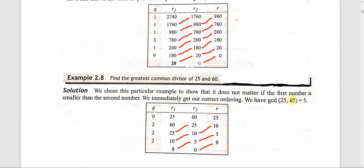This is the application of the Euclidean algorithm for finding the GCD of two numbers.